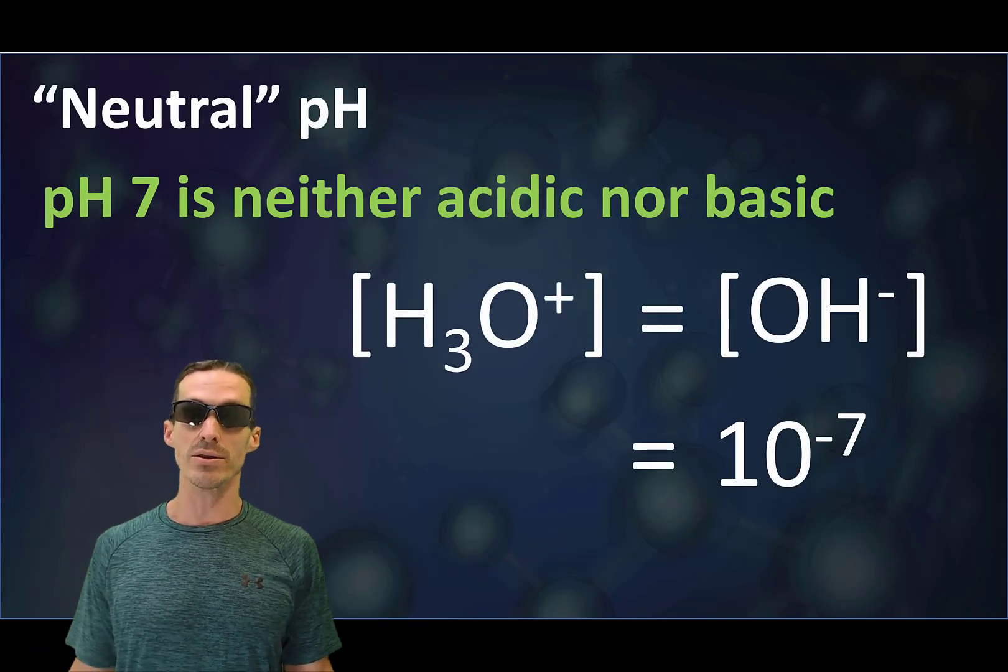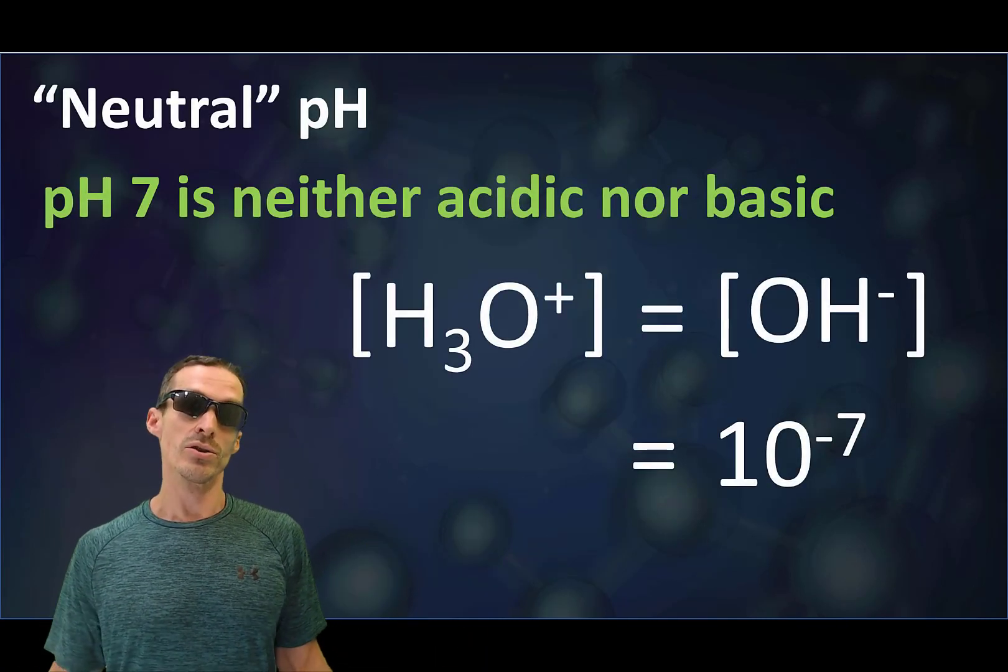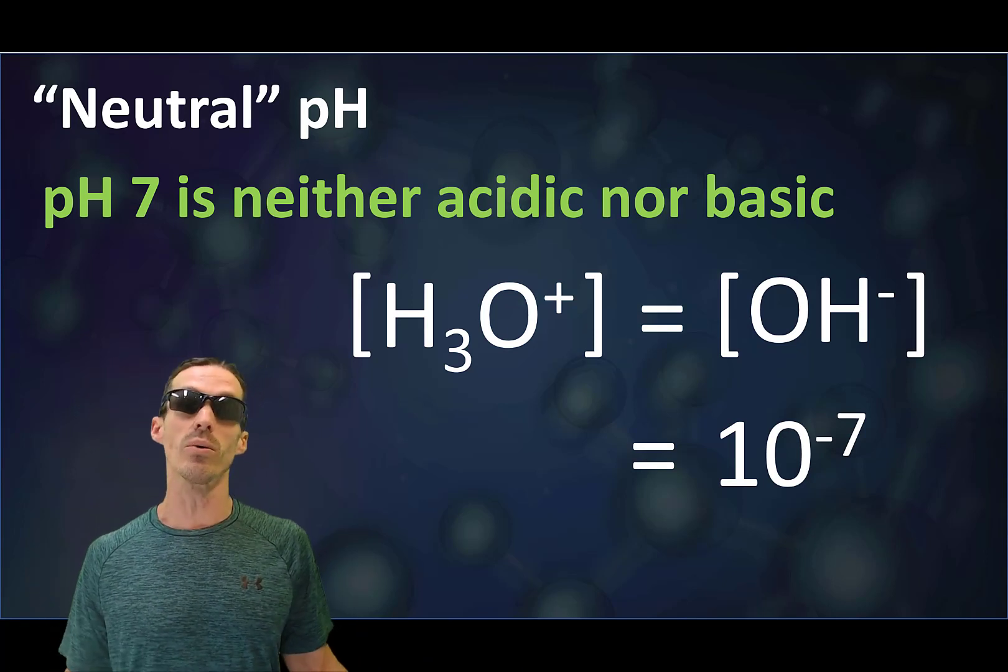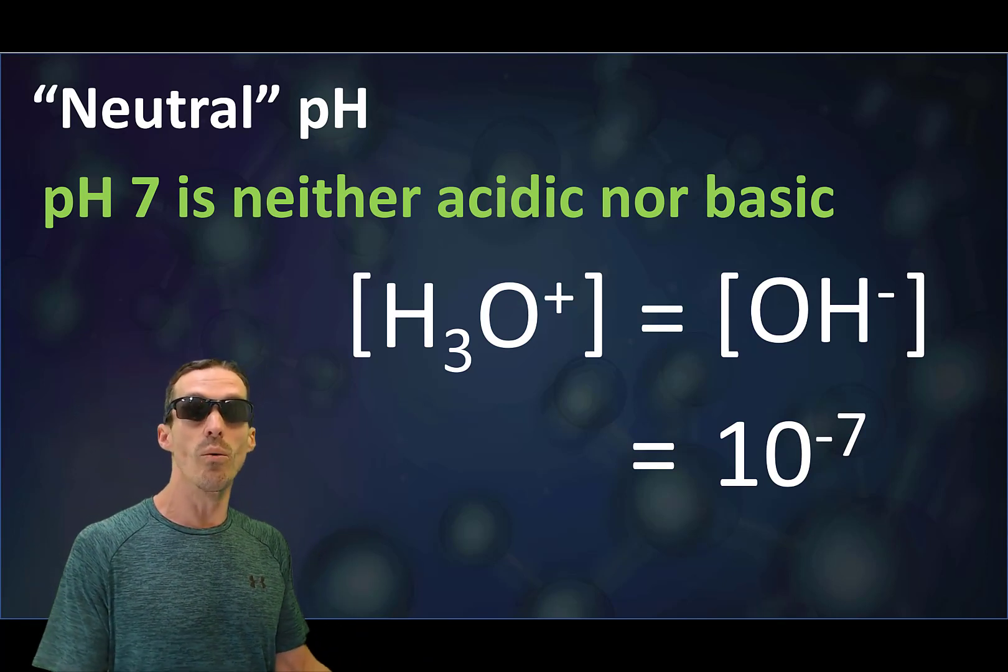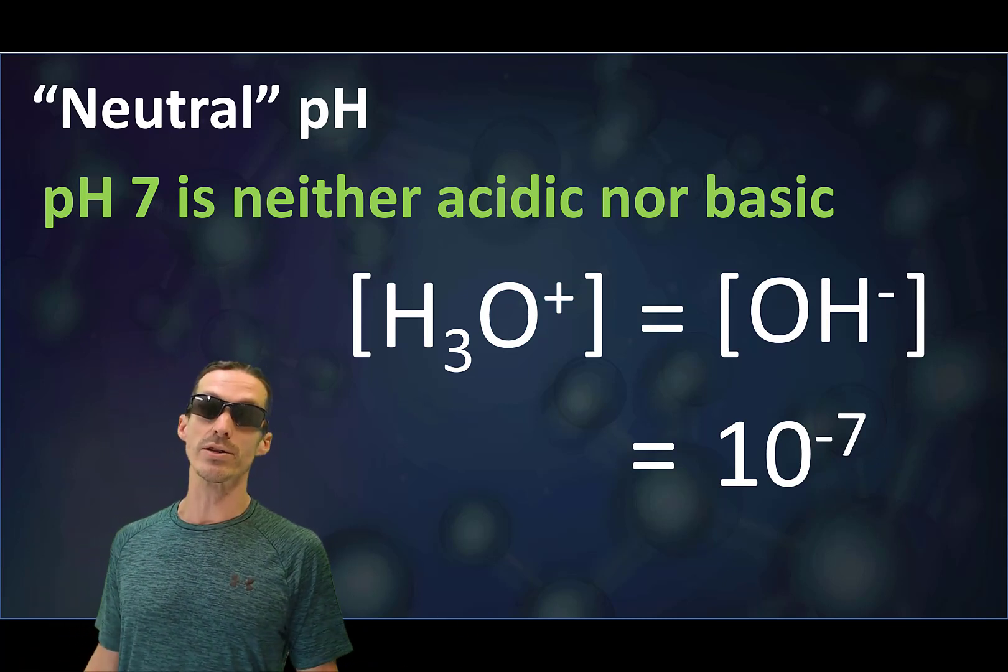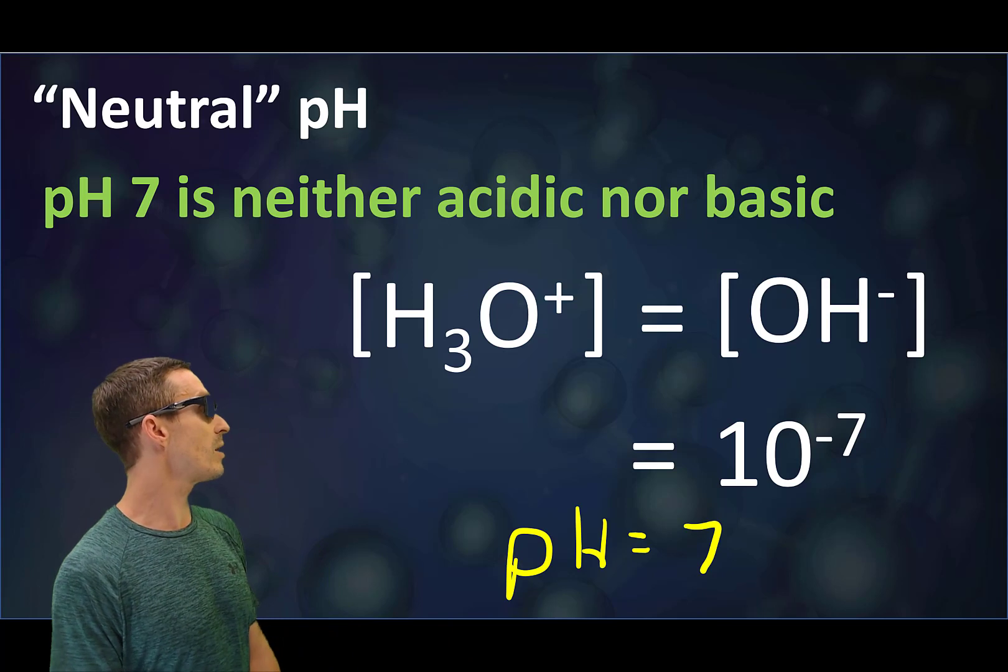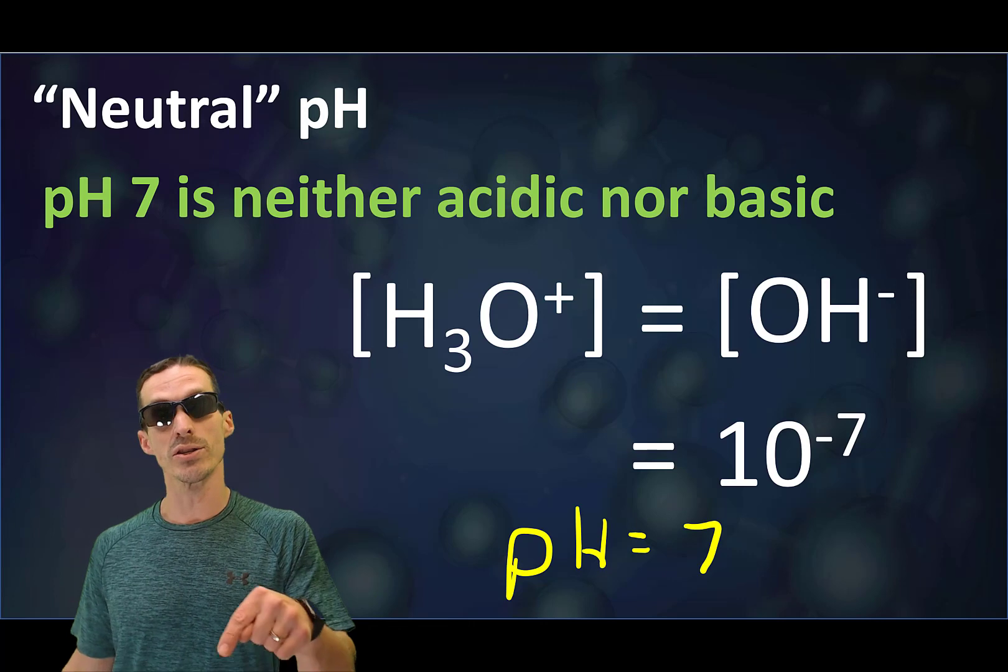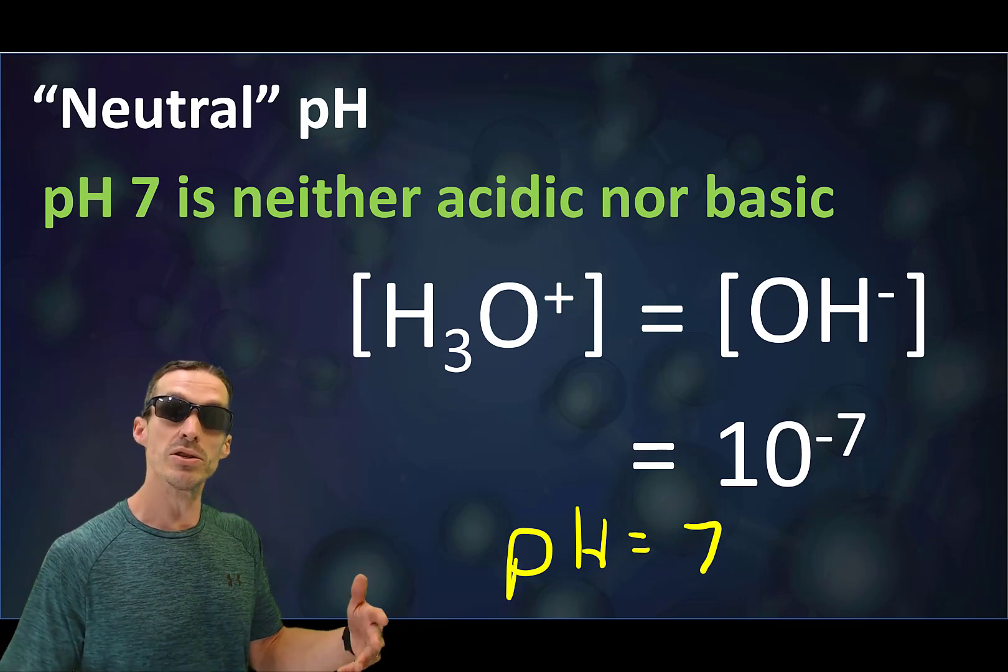One thing that should make sense is the pH when it's neutral. So neutral means that the concentration of H plus and OH will be equal. And when we're talking about water, that happens when the concentrations are 10 to the minus 7, and that means you can calculate the pH will be 7.